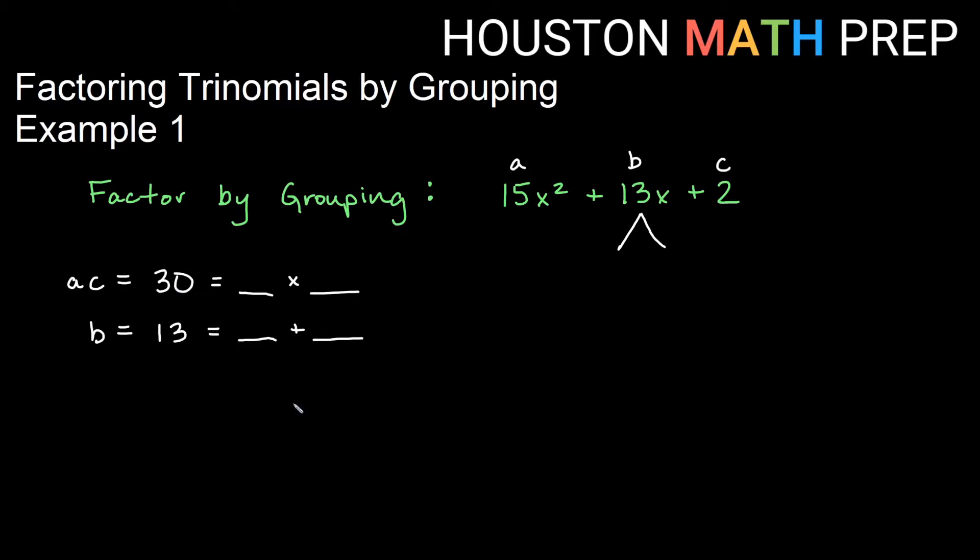So I look at what two numbers multiply to get 30 and add to get 13. And if you look for a second, you might find that the answers are 3 and 10. 3 times 10 will give us 30, and 3 plus 10 will give us 13.